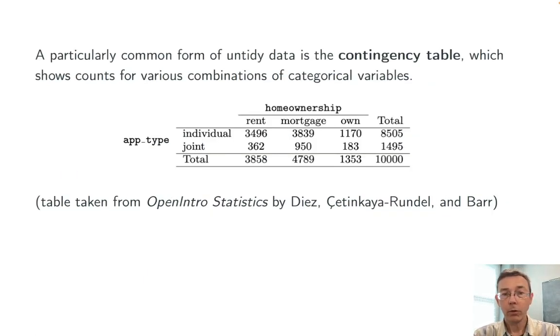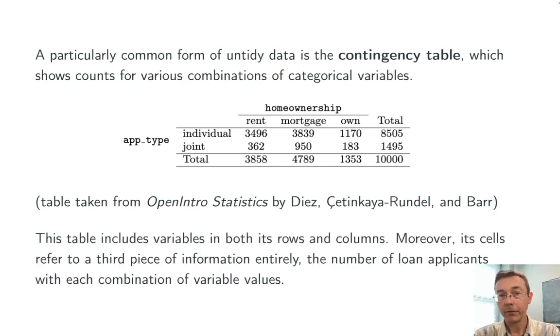To wrap up this video, I want to mention one very common format for non-tidy data, and that's the contingency table. A contingency table shows counts for various combinations of categorical variables. Here's an example that I've taken from the excellent free textbook, Open Intro Statistics. It shows some summary information about 10,000 loans given to either individuals or couples that either rent, mortgage, or own their home. Notice that this table includes variables in both the rows and columns. Moreover, the individual cells contain another sort of information entirely, the counts.